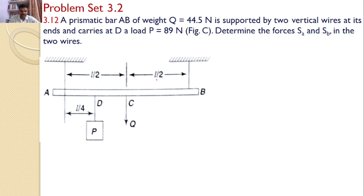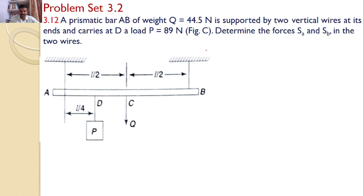Welcome to RK Tutorials. Solutions to Engineering Mechanics by S. Dimashenko. In this tutorial, we will discuss problem set 3.2, problem number 3.12. A prismatic bar AB of weight Q equal to 44.5 N is supported by two vertical wires at its ends and carries at D a load P equal to 89 N, as shown in the figure.